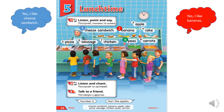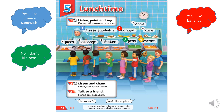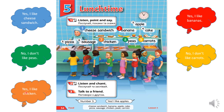Do you like peas? Тобі подобається горох? No, I don't like peas. Ні, мені не подобається горох. Do you like carrots? Тобі подобається морква? No, I don't like carrots. Ні, мені не подобається морква. Do you like chicken? Тобі подобається курка? Yes, I like chicken. Так, мені подобається курка.